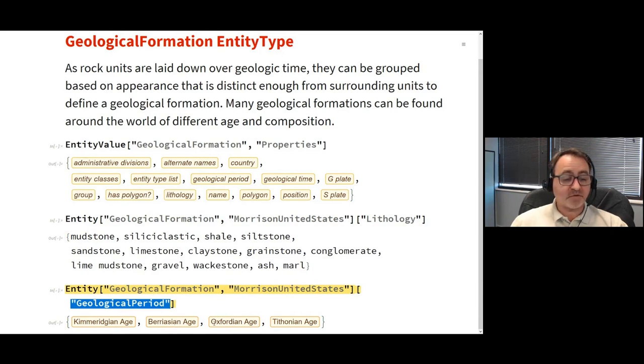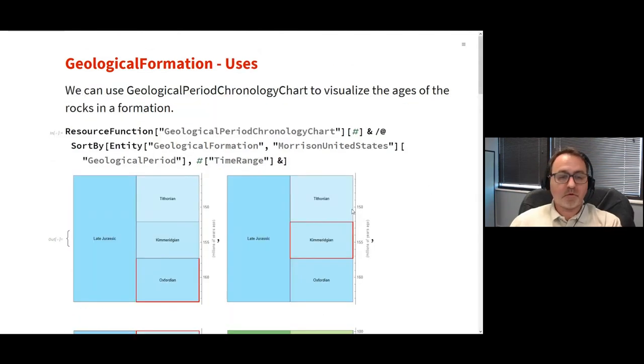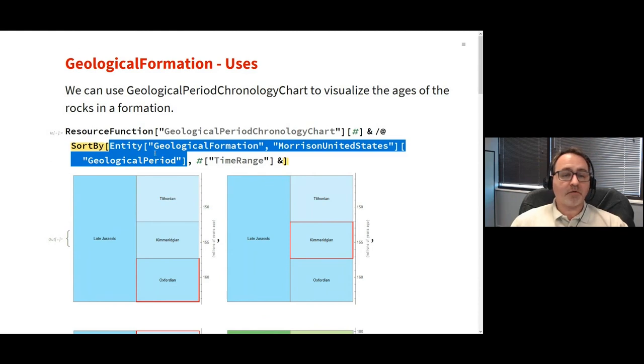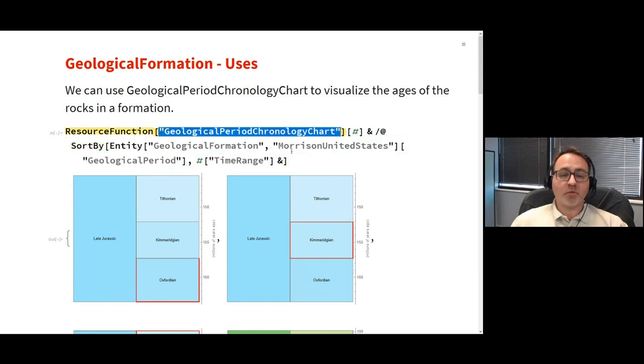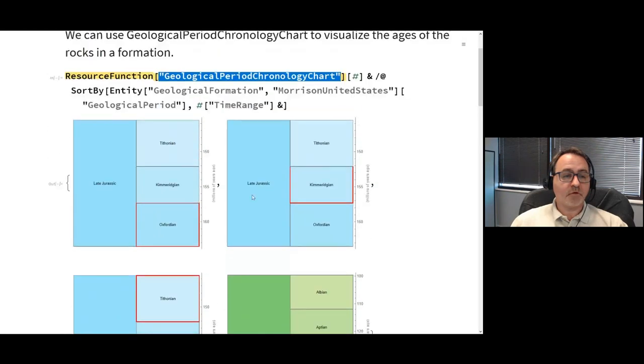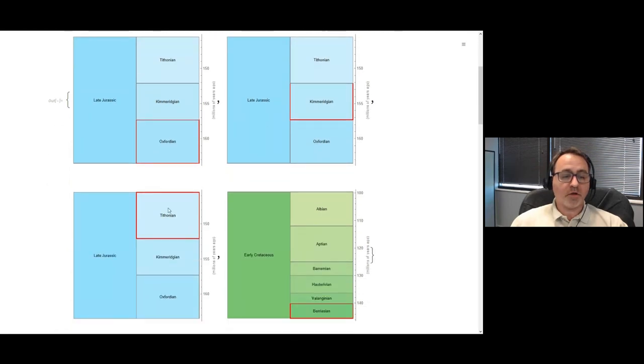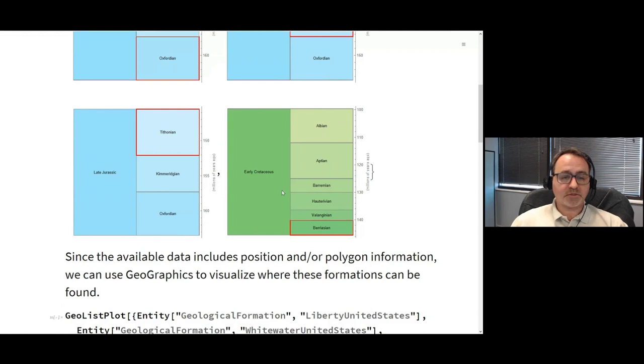Here I've asked what geological periods does that formation correspond to. You can see it corresponds to several different ages. We can plot from the geological period of that formation, sort them by time range, and call the geological period chronology chart to see that the geological periods are part of the late Jurassic. The Morrison formation comes from the late Jurassic and early Cretaceous. That's why dinosaur fossils are often found there, because it's during the Mesozoic when dinosaurs were around.